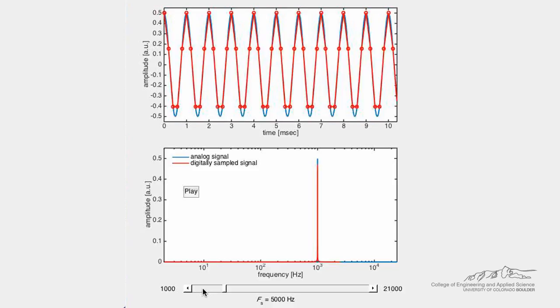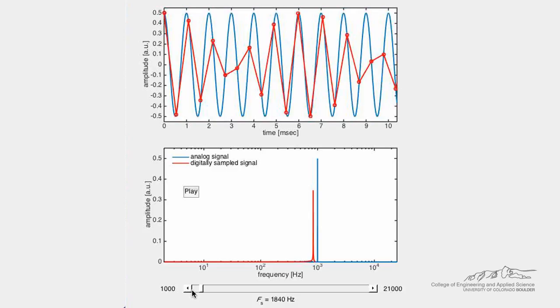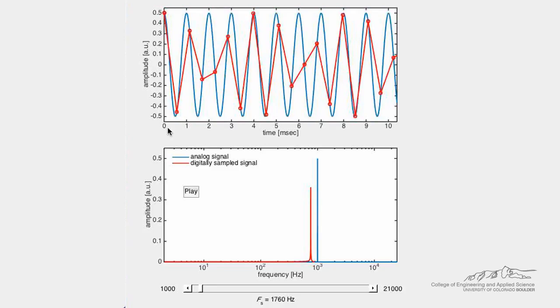Ultimately, we get to the Nyquist frequency, which is the lower limit to our sampling frequency. Below the Nyquist frequency, we start to see aliasing. The effect of aliasing can be seen in the time domain, but is more apparent in the frequency domain.